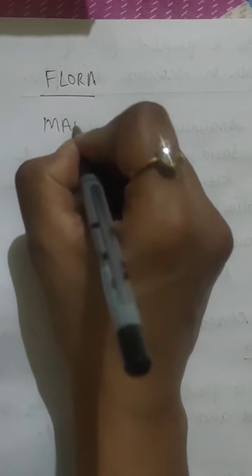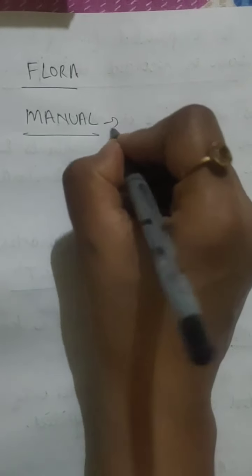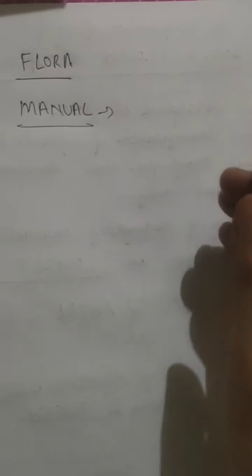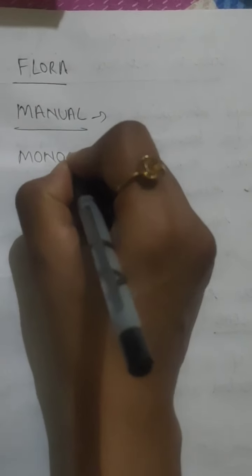A manual is also a book which contains information of the plants growing in a particular area. They have descriptions and lists of plants in an area and are used to identify the name of particular species. A monograph is a form of literature which contains complete information of a particular taxon — it contains information about the genus, species, order, class, or family of a particular taxon.